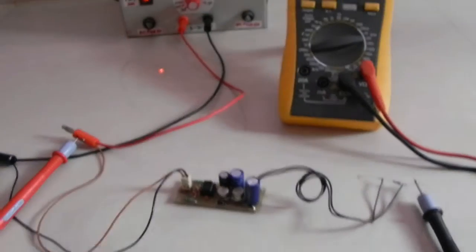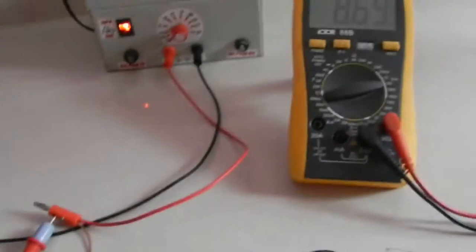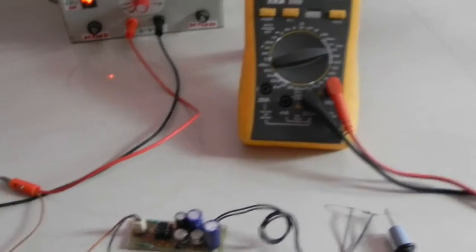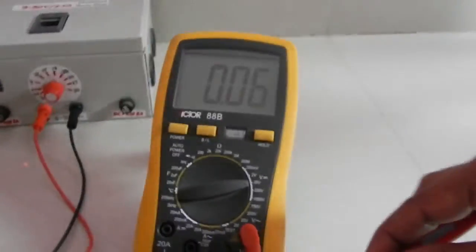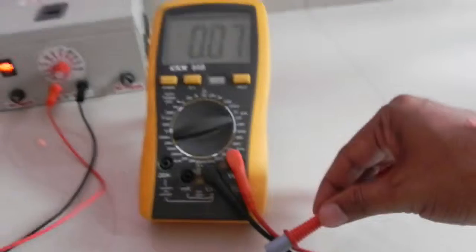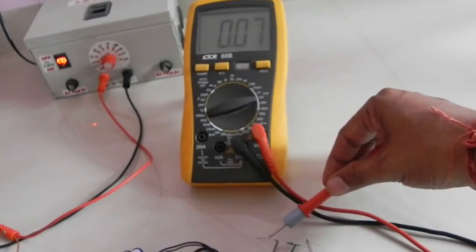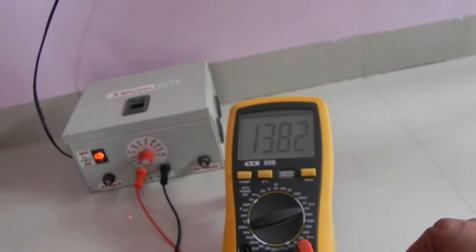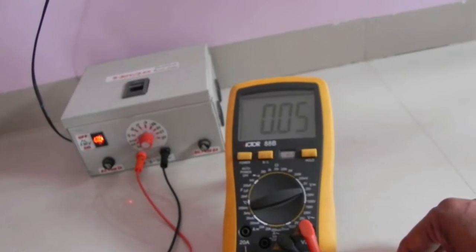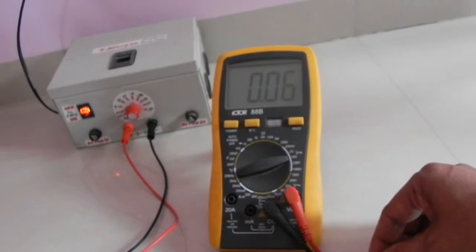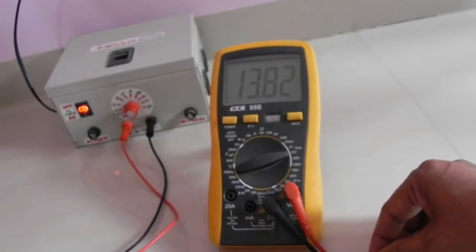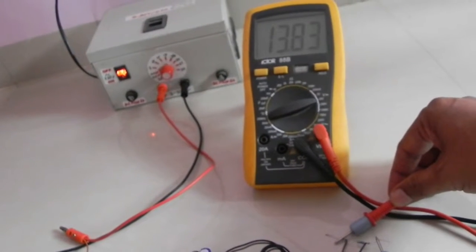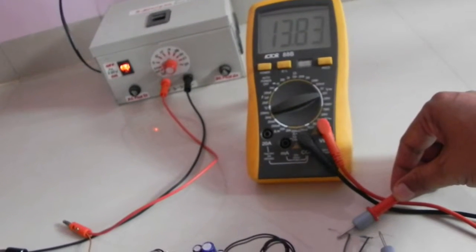Now we will check the output how much it is giving. You see it is about 13.8 volts and it is not exactly doubling the voltage because of the internal losses and we are using 1k resistance as a load to get the output.